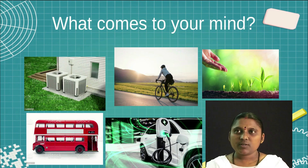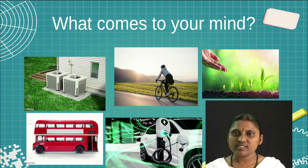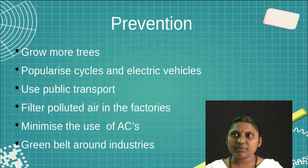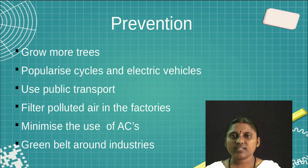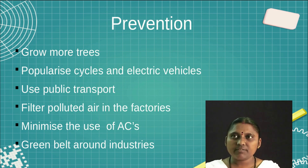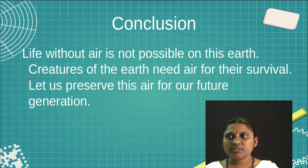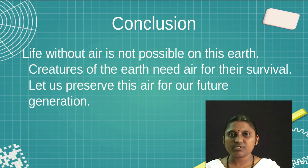By seeing further pictures, I ask students what comes to mind. They may say cycle riding, electric vehicles, public transport, water drops, and air conditions. I then provide points on how to prevent air pollution: growing more trees, popularizing cycles and electric vehicles, using public transport, using filters for polluted air in factory areas, minimizing use of air conditioners, and creating green belts around industries. The conclusion for this essay can be: 'Life without air is not possible on this earth. Creatures of the earth need air for their survival. Let us preserve this air for our future generations.'